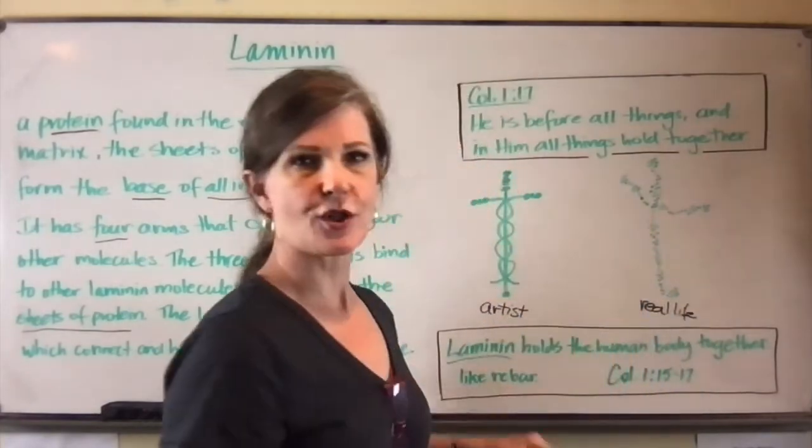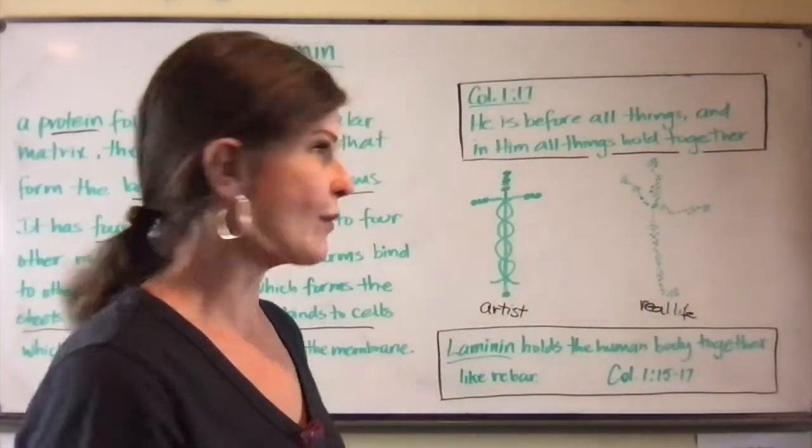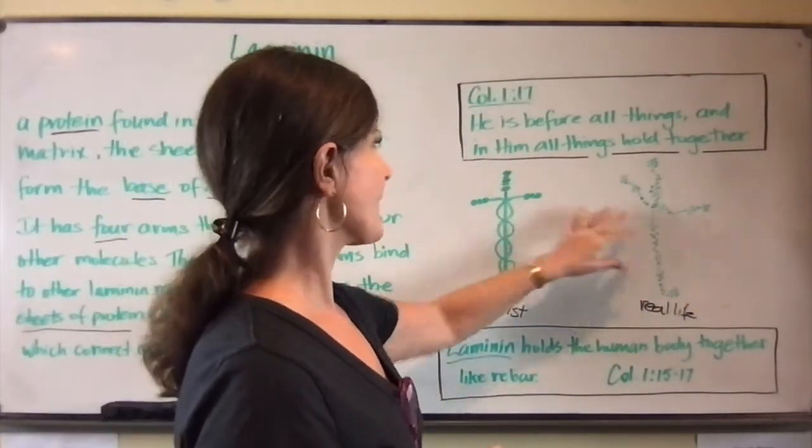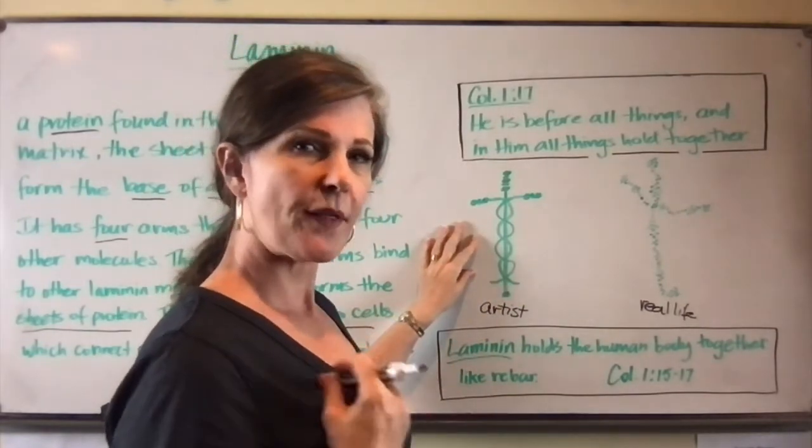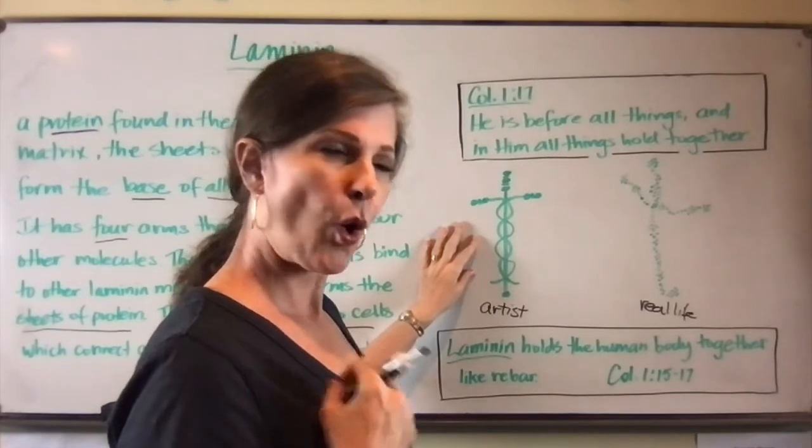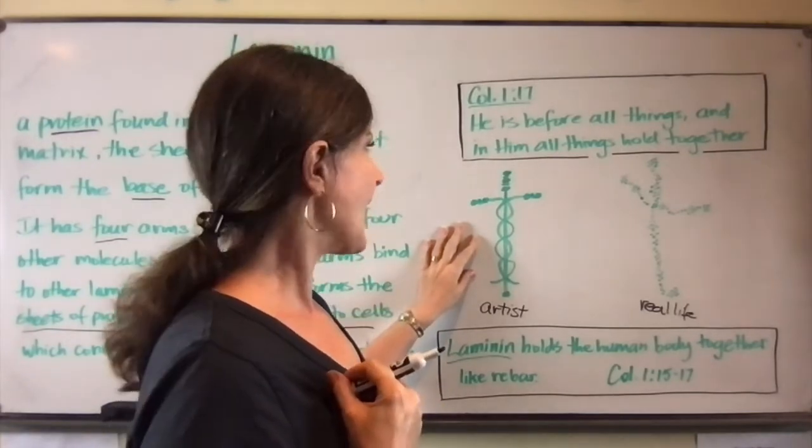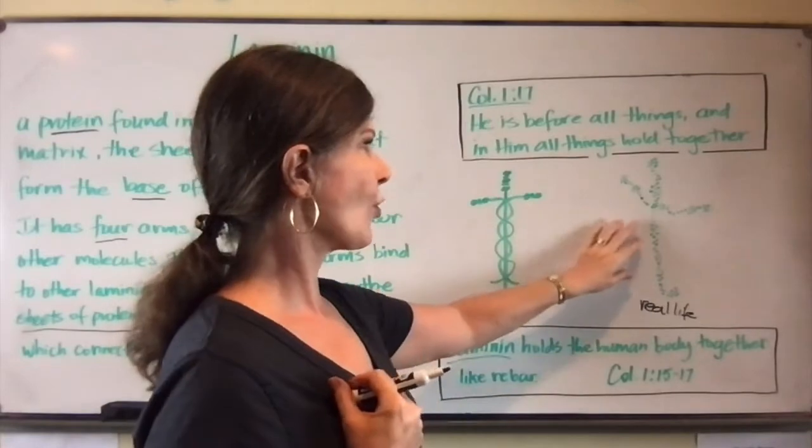A microscopic picture of a laminin protein looks like that. So we're seeing here that laminin is the part of the human body that holds the whole thing together. And it is in the shape of a cross.